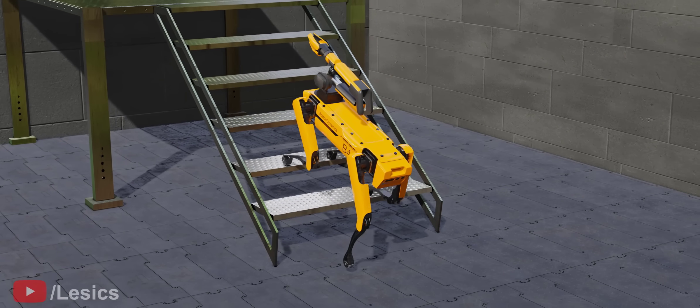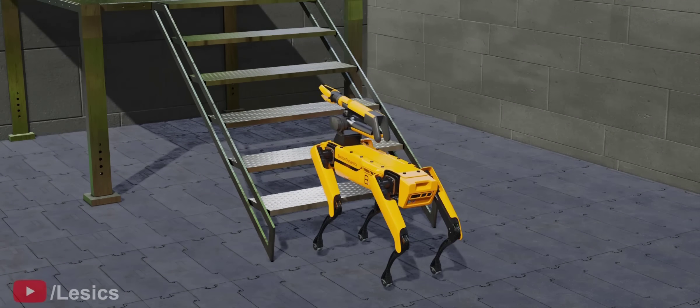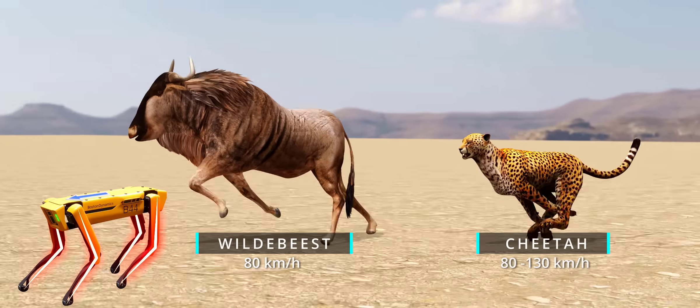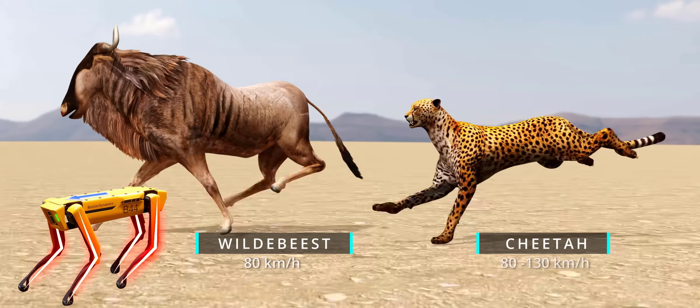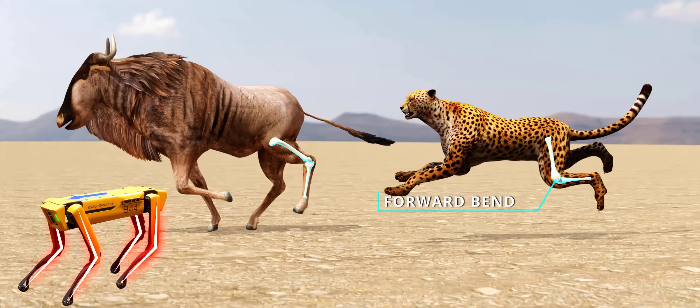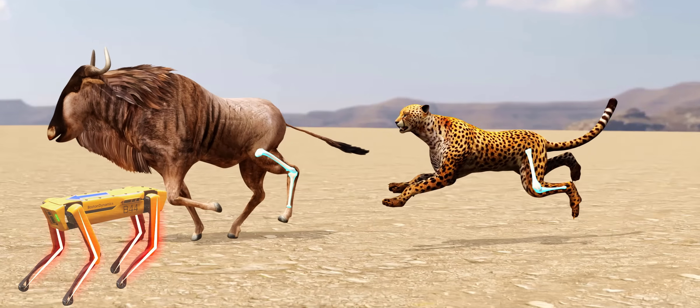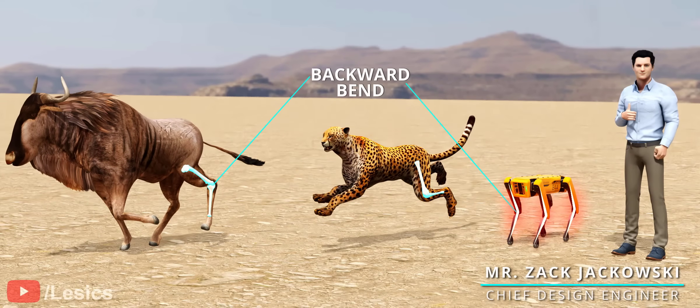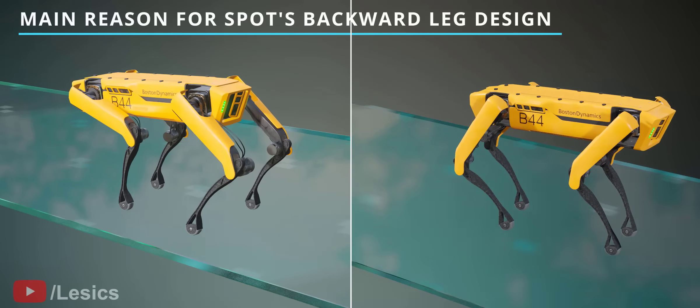Now the genius part of the video, the main reason behind the selection of the backward-bend design. Look at these wild animals. Their leg angles are exactly opposite when we consider their longest limbs. Mr. Jakowski went ahead with a backward-bend design for the spot robot.